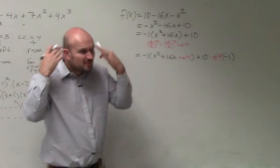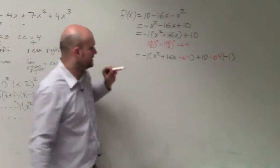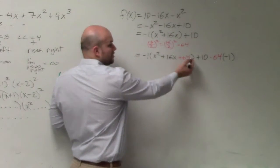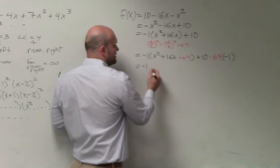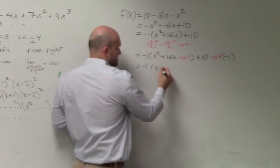So just remember, whenever you factor something out to get a equal to 1, you have to multiply that back. This is a perfect square trinomial because it can be factored down into a binomial squared. X plus 8 squared.